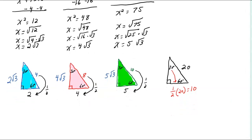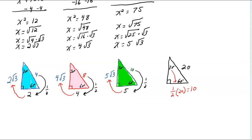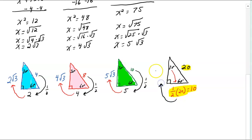Now let's look at this pattern. If the short leg is 2, the long leg — the side across from the 60 — is 2√3. If the short leg is 4, the long leg is 4√3. If the short leg is 5, the long leg is 5√3. So in our example with hypotenuse 20, you take half — short leg is 10 — and then the long leg is 10√3.